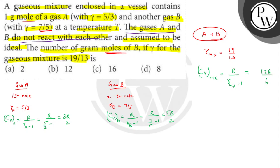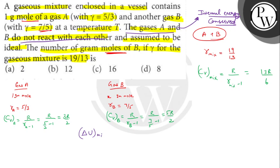We calculated Cv because gases A and B do not react with each other. Since they are not reacting, internal energy is conserved — there is no energy loss. So we apply internal energy conservation. The equation is: delta U of the mixture equals delta U of gas A plus delta U of gas B, where delta U equals n·Cv·delta T.